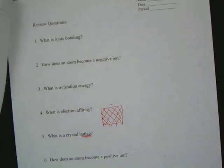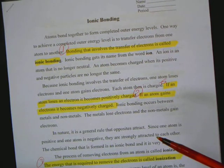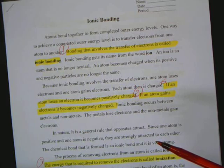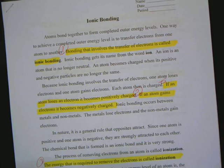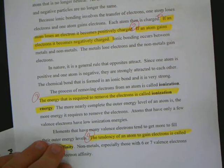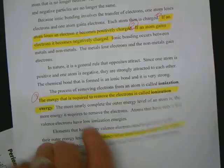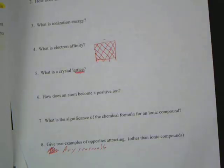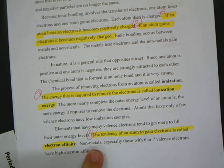How does an atom become a negative ion? Number two starts right here. If an atom loses electrons, it becomes positively charged. If it gains electrons, it becomes negatively charged. That becomes an ion. What is ionization energy? Right here, the energy required to remove the electrons is called ionization energy. Number four, what is electron affinity? The tendency of an atom to gain electrons is called electron affinity.